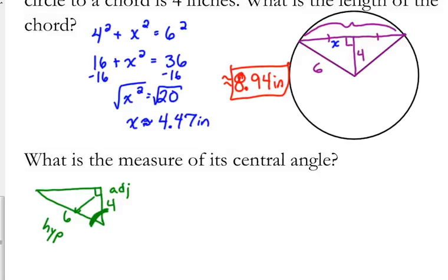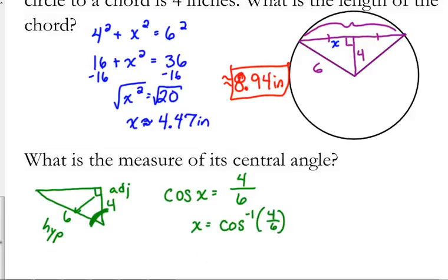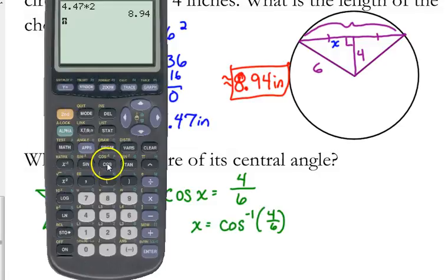Cosine. Okay. Cosine of an angle is equal to the adjacent over the hypotenuse. What we did yesterday when we needed to solve for this, we did the inverse cosine of 4 over 6, which on our calculator is the second cosine 4 over 6.